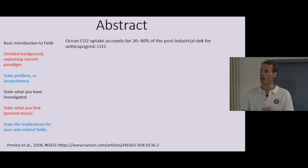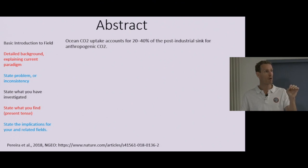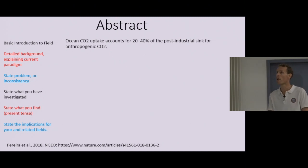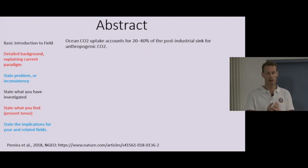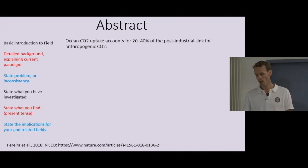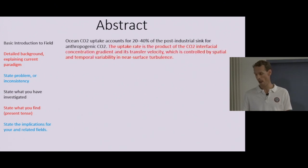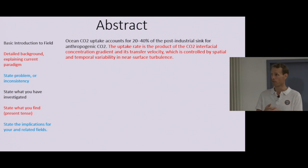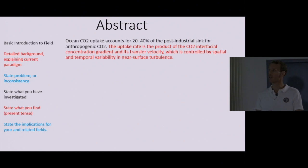On the left-hand side, you have pointers that explain how one phrase should flow to the next to build up a logical and clear abstract. It all starts with a basic introduction to the field: 'Ocean CO2 uptake accounts for 20 to 40% of the post-industrial sink for anthropogenic CO2.' That's a broad audience opening, telling you about the importance of ocean-atmosphere CO2 exchange. Typically, the second phrase goes into the detailed background and explains the current paradigm: 'The uptake rate is the product of the CO2 interfacial concentration gradient and its transfer velocity, which is controlled by spatial and temporal variability in near-surface turbulence.'